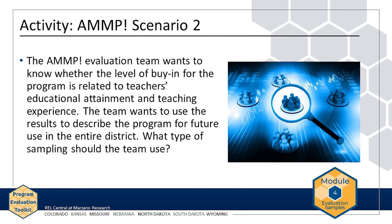The AMP evaluation team wants to know whether the level of buy-in for the program is related to teachers' educational attainment and teaching experience, and wants to use the results to describe the program for future use in the entire district. Because the team is considering teacher characteristics and wants to make a generalization, the most applicable sampling type is stratified random sampling. To make claims about the district without reweighting, the team needs groups of interest represented in the sample in the same proportion as the full population, and collects data from a random sample at each level of attainment and experience.